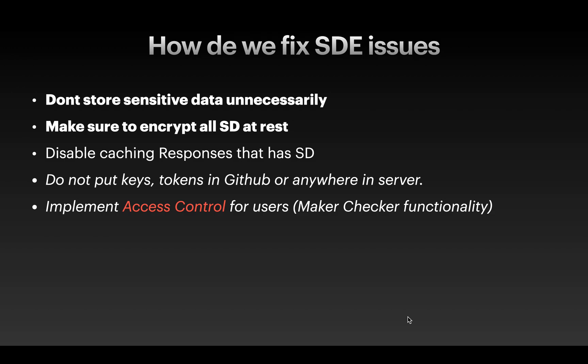How do we fix sensitive data exposure issues? The first step is to not store sensitive data unnecessarily. Next, make sure to encrypt all sensitive data at rest — if you have sensitive data on your server, encrypt everything with strong encryption and a private key. Disable caching of responses that contain sensitive data, and do not put any keys or tokens in GitHub or anywhere on the server.